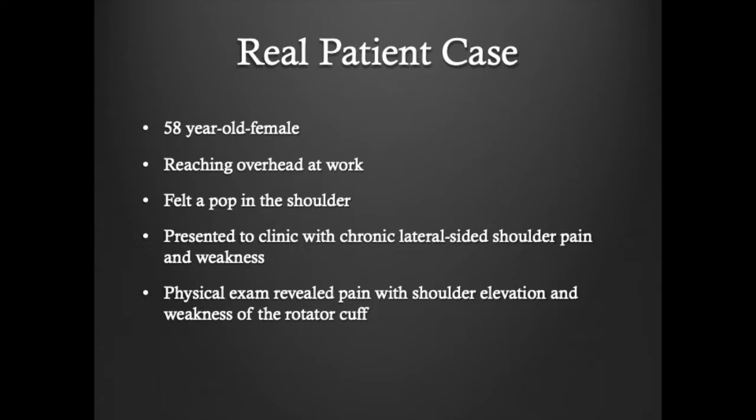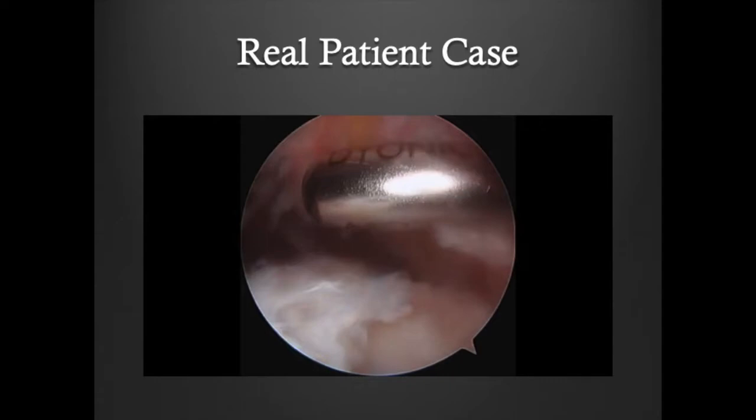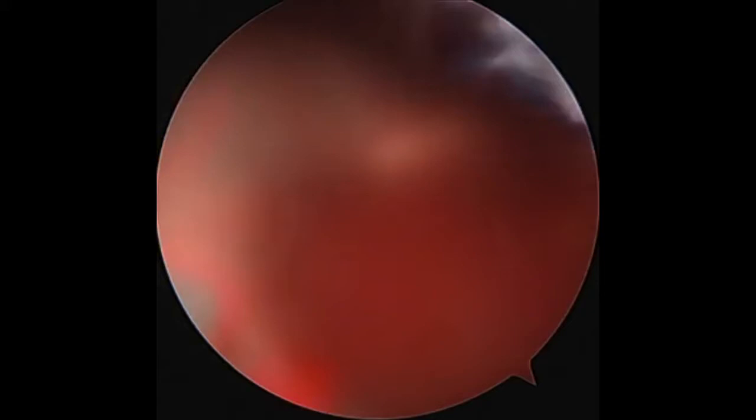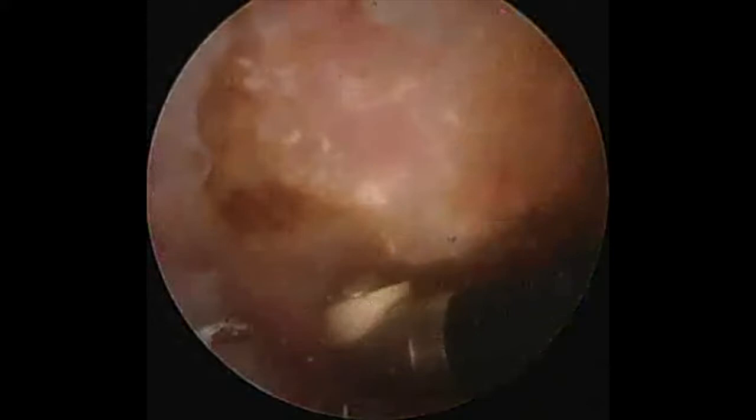This video demonstrates shoulder arthroscopic surgery. Upon entering the subacromial space, there is significant inflammation and bursitis. This is first removed with a shaver. Following this, the subacromial spur is demonstrated and is removed to prevent impingement.